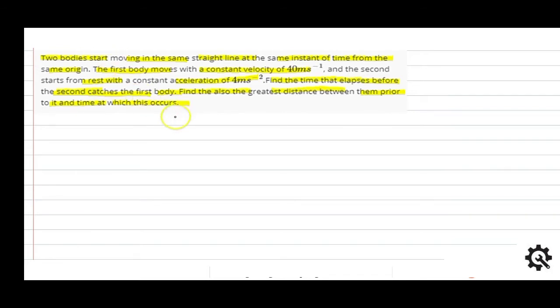Here is the first body. Velocity is 40 meters per second. They move in the same direction. Distance traveled by the first body is equal to what?